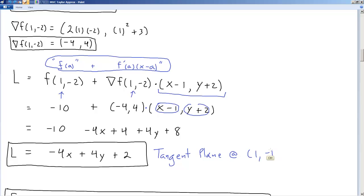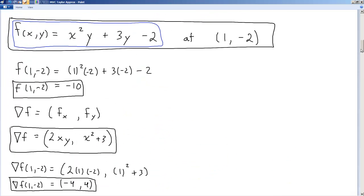Tangent plane at 1, -2. Well, really at 1, -2, -10. That's where at this point this plane is tangent to the function that we were given up here.